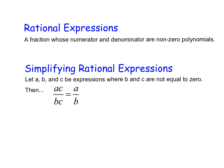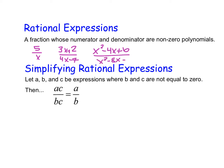This can range from something as simple as 5 over x, which is a very simple polynomial, to something a little more complicated such as 3x plus 2 over 4x minus 7. And then it can become something even more complicated, such as x squared minus 4x plus 6 over x squared minus 8x minus 10.